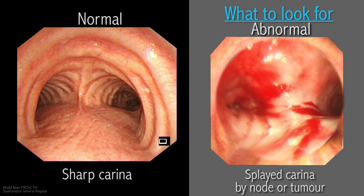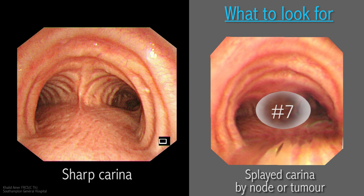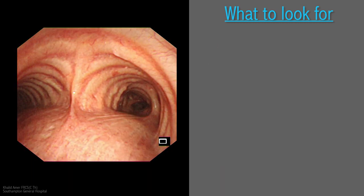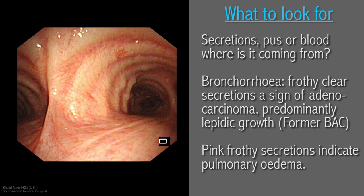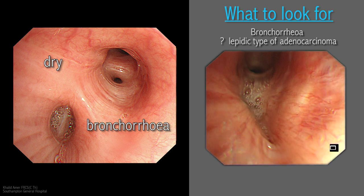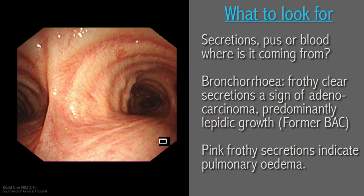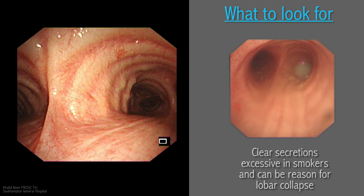The primary carina C1 is usually very sharp, in contrast to a splayed or widened carina, which signifies underlying enlarged subcarinal lymph nodes in station 7 or malignant tumour directly splaying the carina. General assessment of the airway is important and can predict postoperative complications. The operator should take note of secretions, pus, or blood in the airways and the anatomical site of origin. Excessive clear frothy secretions called bronchorrhoea signify adenocarcinoma, lipidic type, previously known as bronchioloalveolar carcinoma. Pink froth is usually indicative of left ventricular heart failure and pulmonary oedema. Excessive secretions in a smoker might prompt a prophylactic mini-trach at the end of surgical resection.